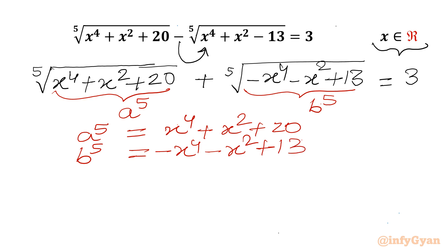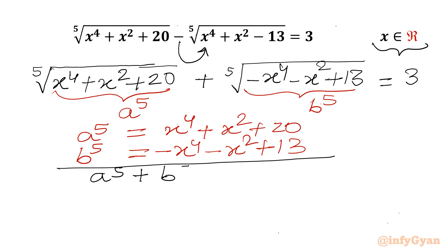Let us add both the equations. So I can write a⁵ + b⁵ = 33. Let us call this equation number 1. These two terms cancel out.